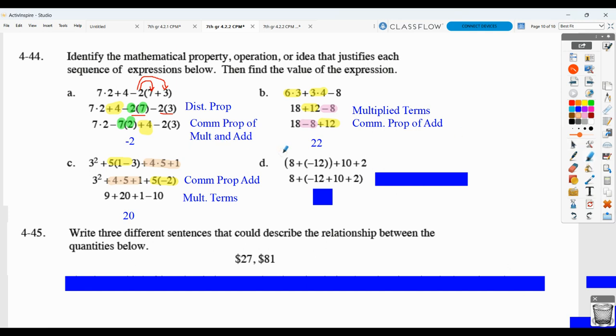Here, we have eight plus negative twelve plus ten plus two. We still have eight plus negative twelve plus ten plus two, but we've changed where we placed the parentheses. Here it was around this. Now it's around this. So, when we change what's being grouped together, that's the associative property, specifically associative property of addition.